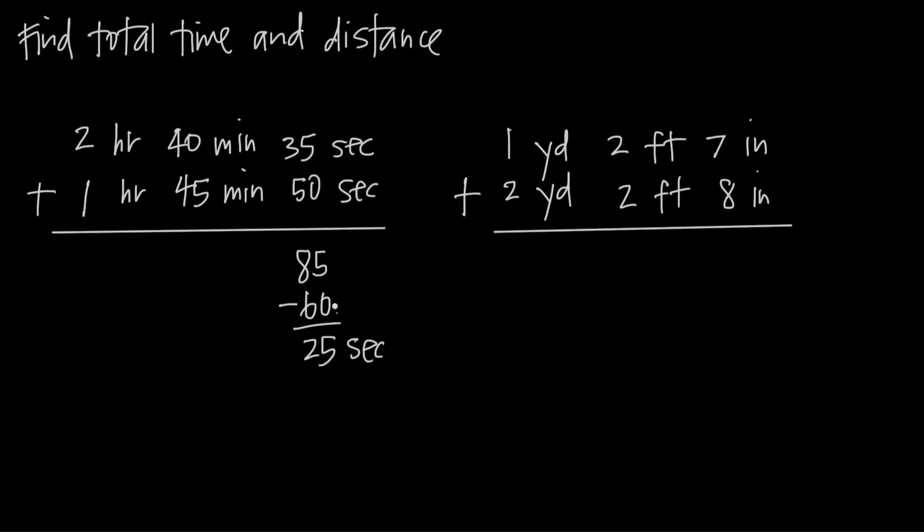We subtracted 60 seconds, which was a minute, so we carry that minute over to the minutes column. Then we add: 1 plus 40 plus 45 is 86. But there's only 60 minutes in an hour, so we need to subtract 60.